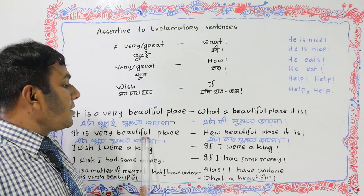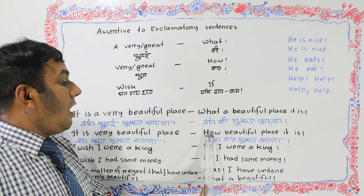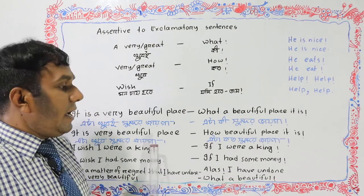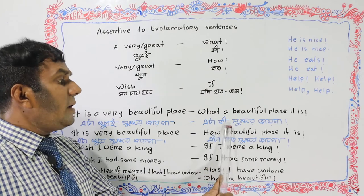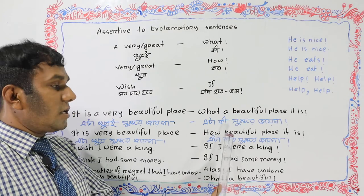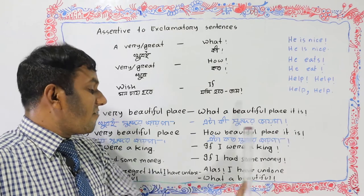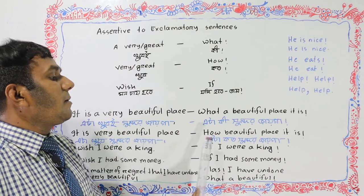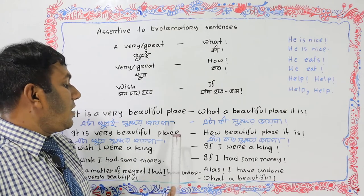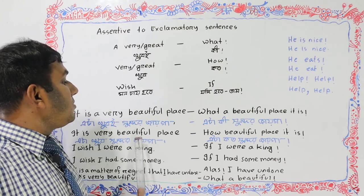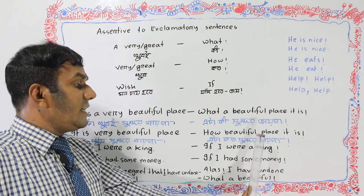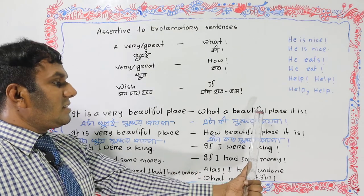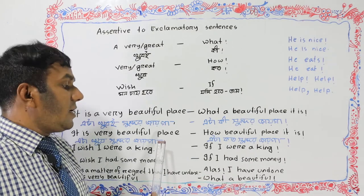We can also use 'how' instead. 'How beautiful place it is' - this is another way. The assertive sentence 'It is a very beautiful place' becomes 'What a beautiful place it is' or 'How beautiful place it is.'